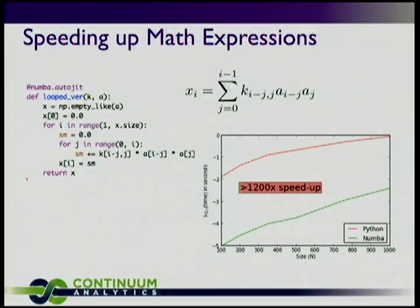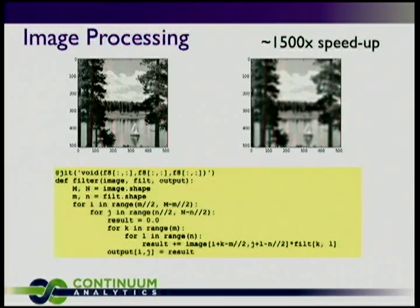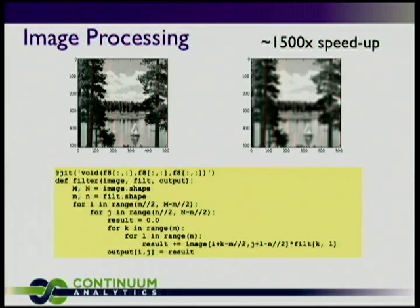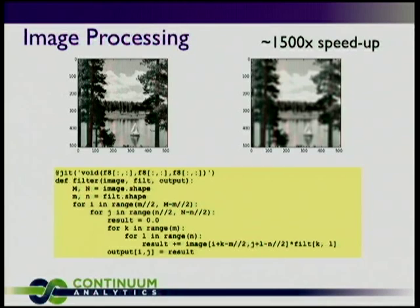That 1200x speedup decreases to about 200-300x as array sizes get bigger where more time is spent copying. For image processing, taking nested for loops for a simple convolution filter, a 1500x speedup is not uncommon. And one nice thing about using Numba is the debugging workflow: just don't decorate and debug with Python. Make sure to shrink your arrays — since 1500x is a big speedup, you don't want to iterate over something that now takes 30 seconds instead of a tenth of a second. Debug your algorithm, then speed it up with a decorator.